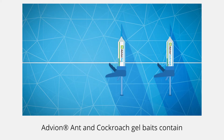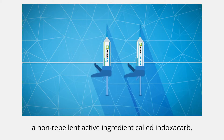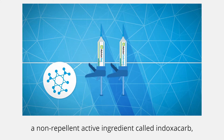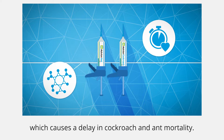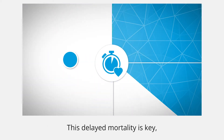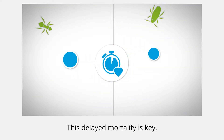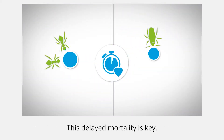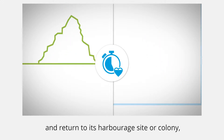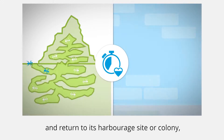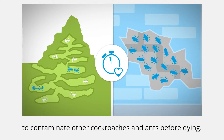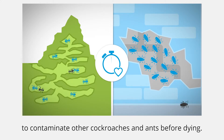Advant ant and cockroach gel baits contain a non-repellent active ingredient called indoxacarb, which causes a delay in cockroach and ant mortality. This delayed mortality is key, as it allows the insect to consume the bait and return to its harbourage site or colony to contaminate other cockroaches and ants before dying.